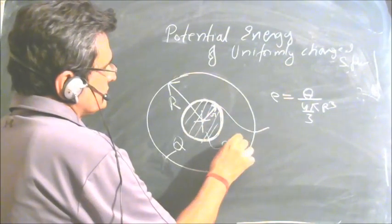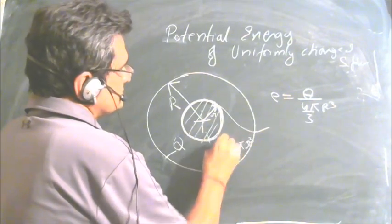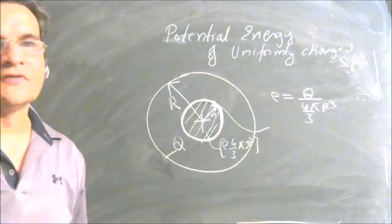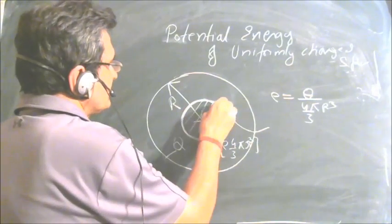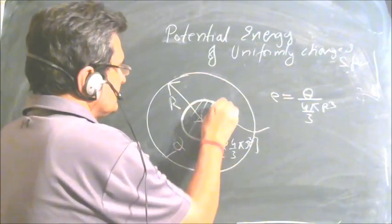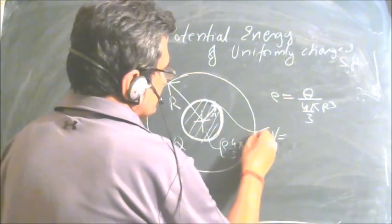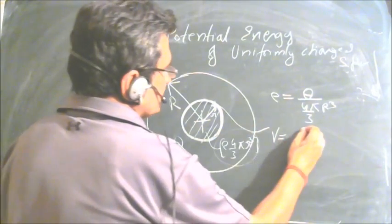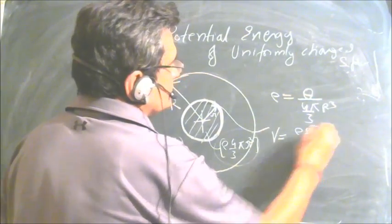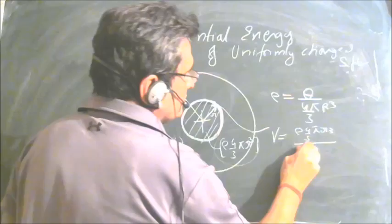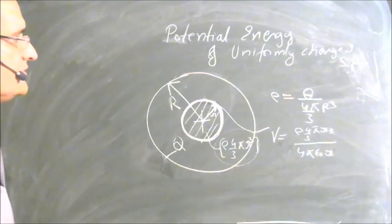The density is rho, so the charge inside this sphere of radius r is (4/3)πr³ · rho. The potential at this distance r — that is, at the surface of this intermediate sphere — is V = rho · (4/3)πr³ / (4πε₀r).